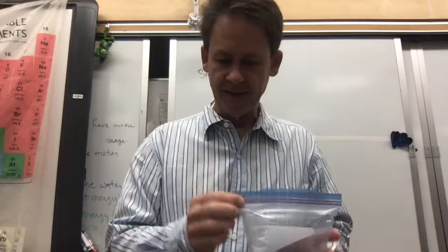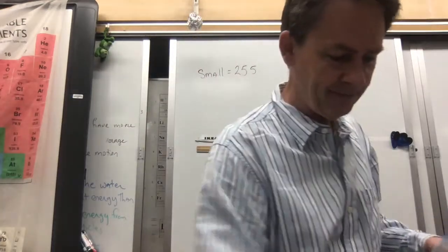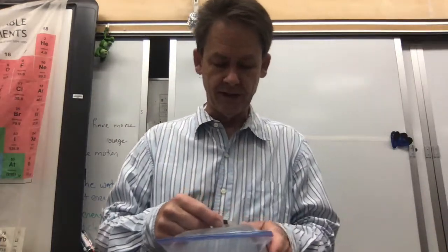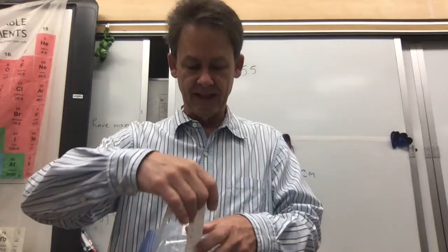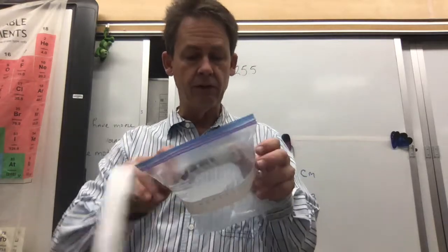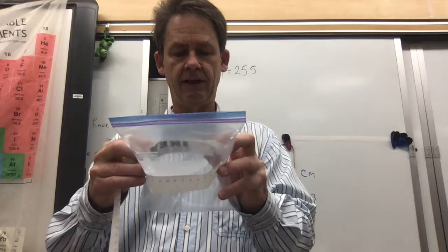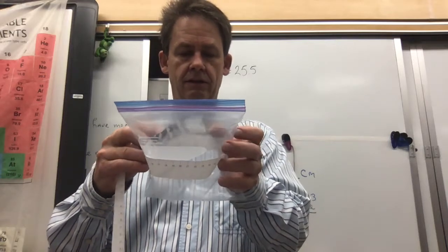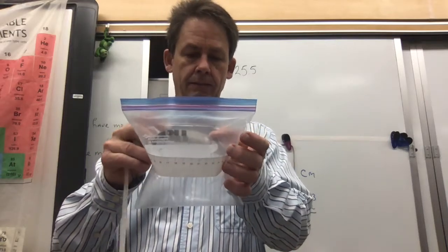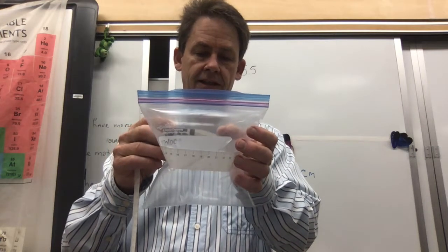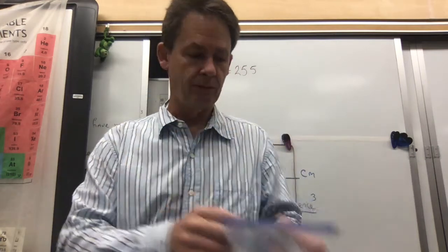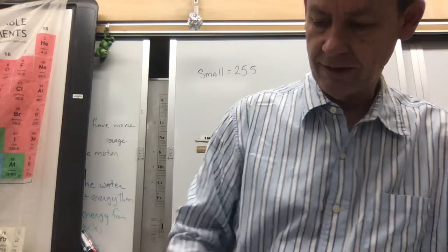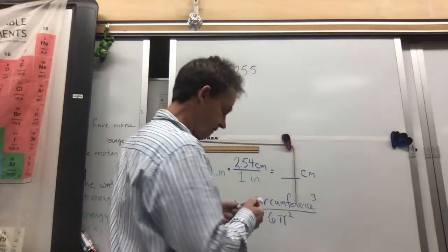Now ideally you wouldn't have to always use a string—you might have a flexible ruler to wrap around, and I do. Props to IKEA for supplying this. 35.8, so our second measurement of the medium balloon—our bag—is 35.8 centimeters.